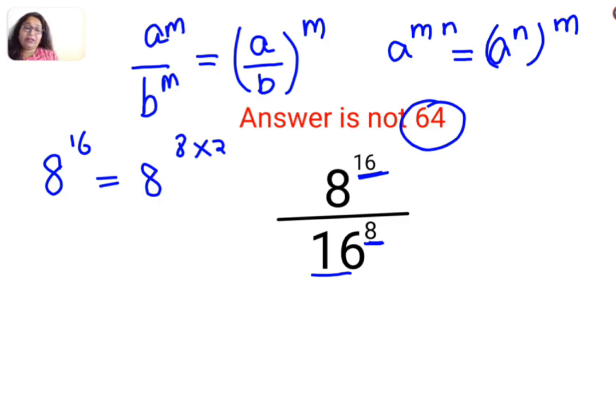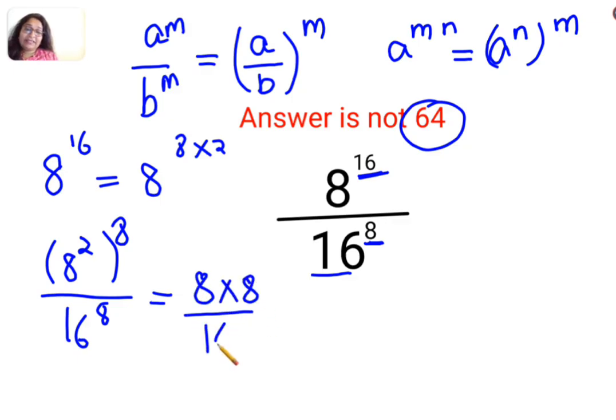So here instead of 8 raised to 16, I can write it as 8 square the whole raised to 8. And in the denominator, I will continue to write it as 16 raised to 8. So this can be written as 8 multiplied by 8 upon 16, the whole raised to 8.